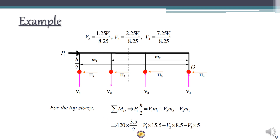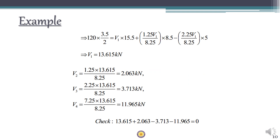Next, we take moments about the contraflexure point in the last column. The moment equation is: V1×(H2/2) = V1×M1 + V2×M2 − V3×M3. Substituting V2 and V3 in terms of V1 gives an expression for V1. Once V1 is found, we back-substitute to find V2, V3, and V4. V1 and V2 are tensile axial forces (first and second columns), while V3 and V4 are compressive. The total tensile force equals the total compressive force, so the net vertical force sums to zero.